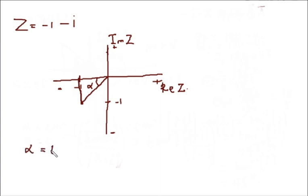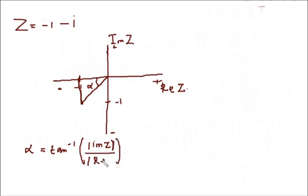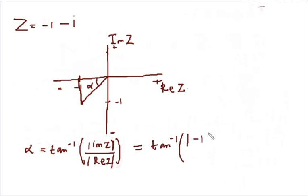To find alpha, alpha is the tan inverse of the absolute value of the imaginary part of z over the absolute value of the real part of z. From here, the imaginary part of z is minus 1 and the real part of z is minus 1. So we have the absolute value of minus 1 divided by the absolute value of minus 1. The absolute value of a negative number is positive.